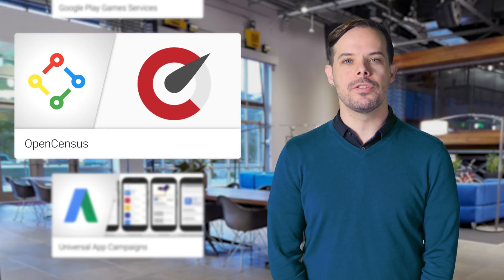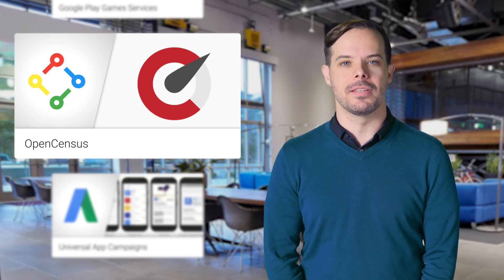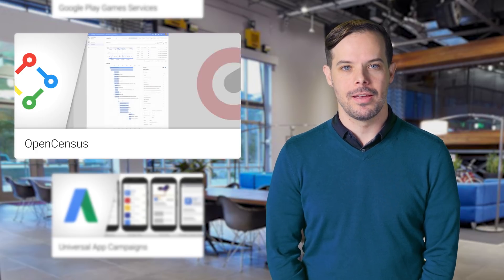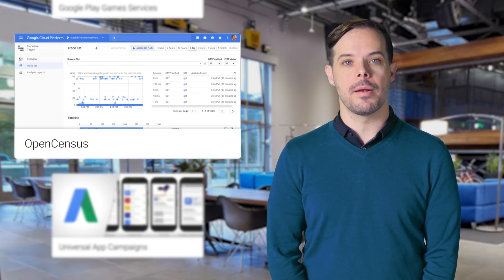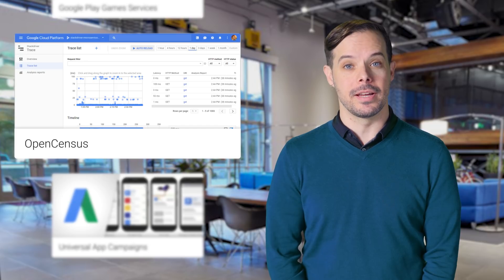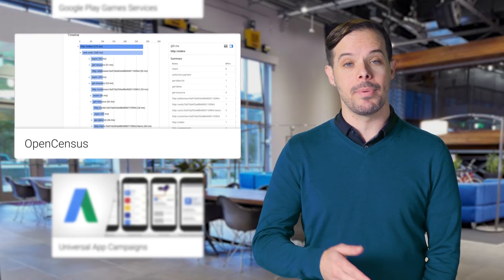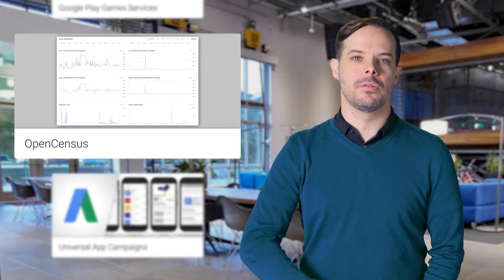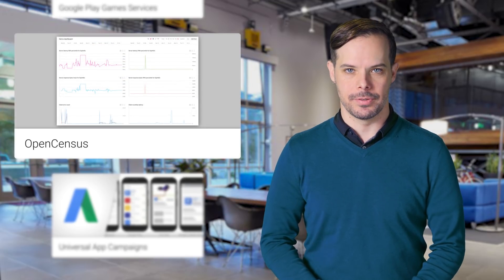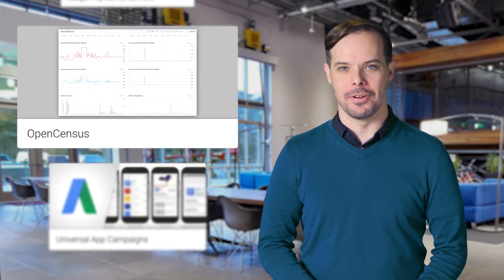OpenCensus is the open source version of Google's census library based on years of optimization experience. It's a vendor-neutral, single distribution of libraries that automatically collects traces and metrics from your app, displays them locally, and sends them over to analysis tools. Head on over to the post for screenshots and links to code.